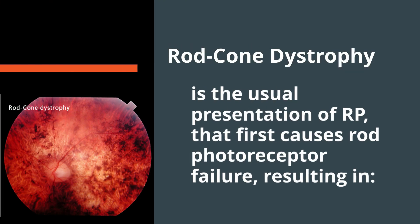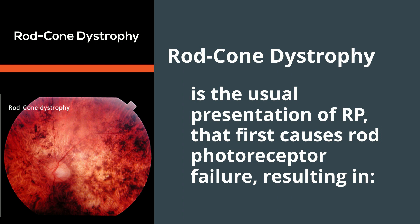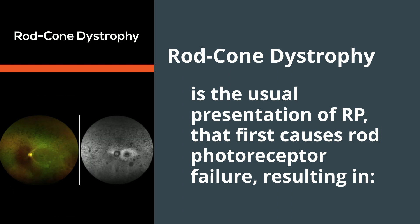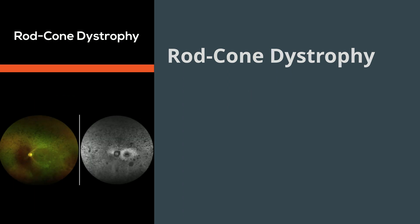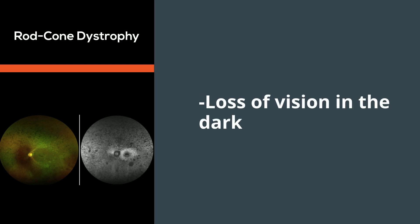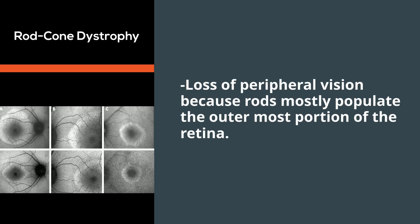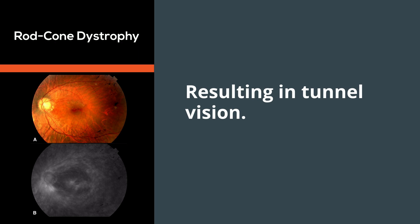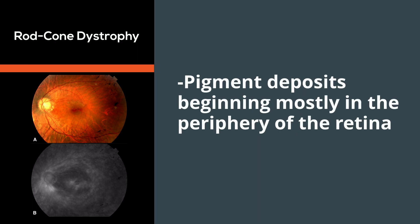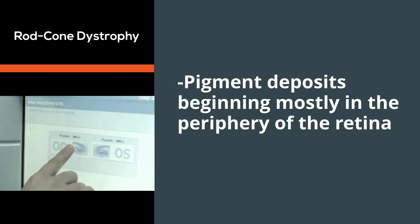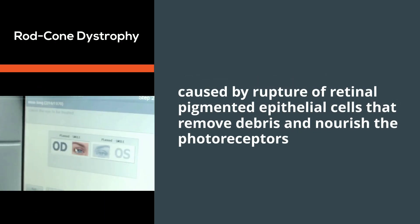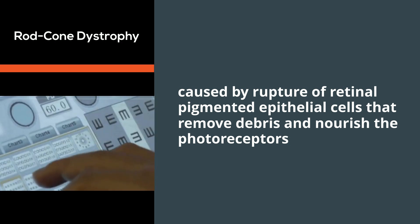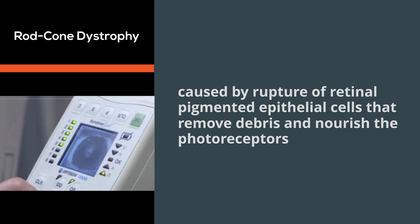Rod Cone Dystrophy is the usual presentation of RP. It first causes rod photoreceptor failure, resulting in loss of vision in the dark and loss of peripheral vision, because rods mostly populate the outermost portion of the retina, resulting in tunnel vision. Pigment deposits begin mostly in the periphery of the retina, caused by rupture of retinal pigmented epithelial cells that remove debris and nourish the photoreceptors.